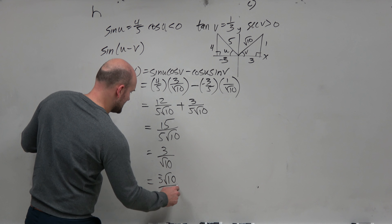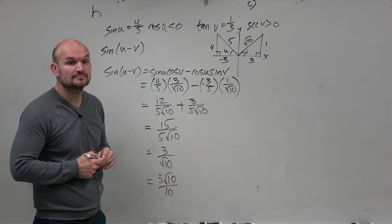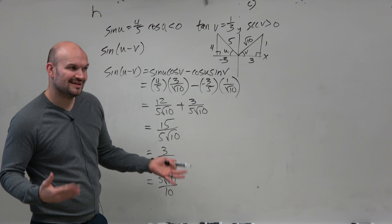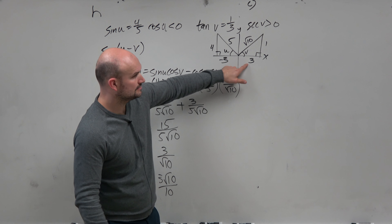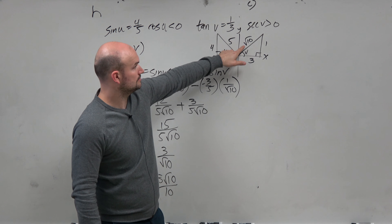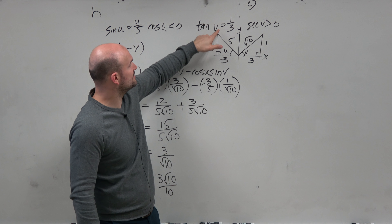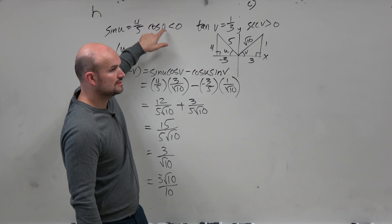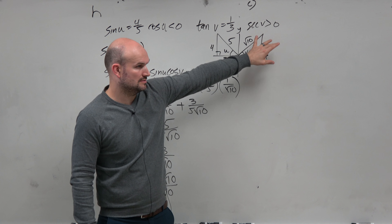Well, they have common denominators. I made a mistake — it's minus, so that's a plus. That's going to be 15 over 5 square root of 10. 15 over 5 reduces to 3 over square root of 10. And then I can rationalize the denominator, which we've already done multiple times, to give the final answer of 3 square root of 10 over 10.